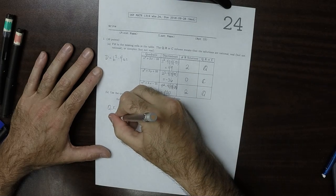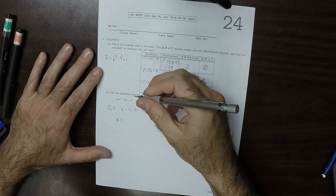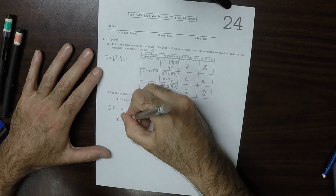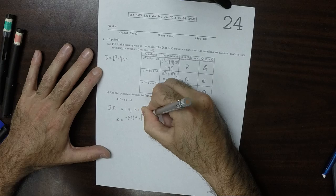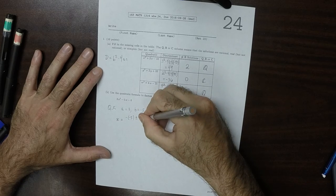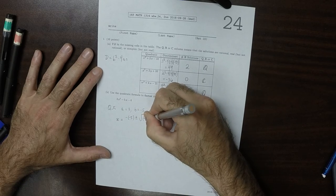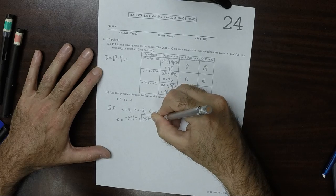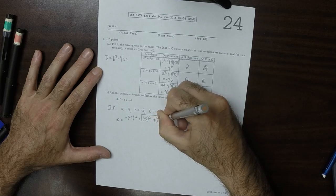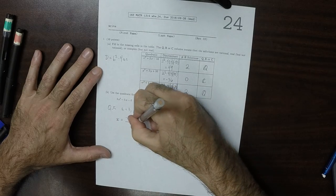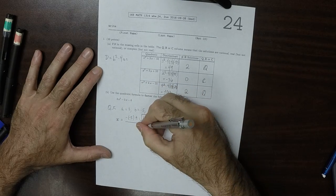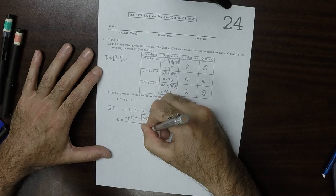So the solutions are negative b plus or minus the square root of negative 5 squared minus 4 times 3 times negative 6, all of this divided by 2 times 3.